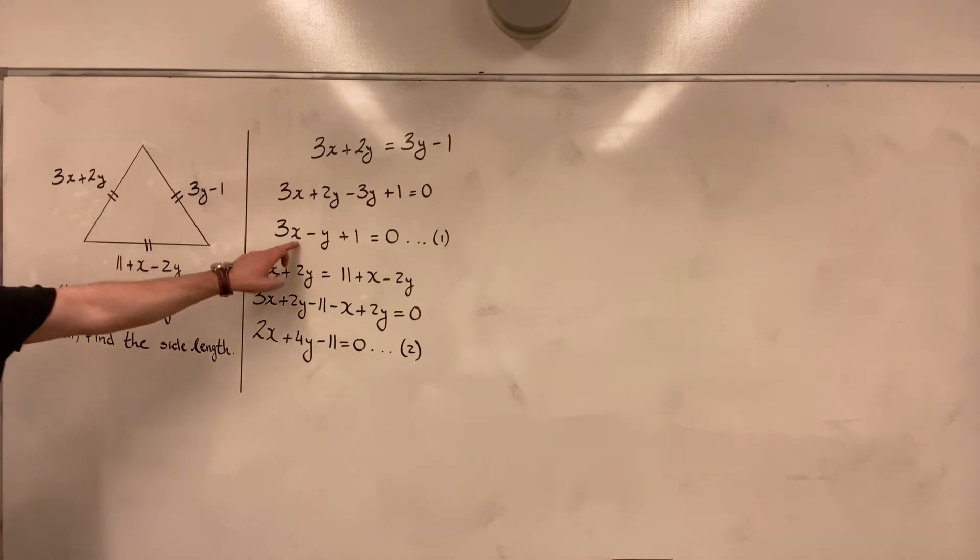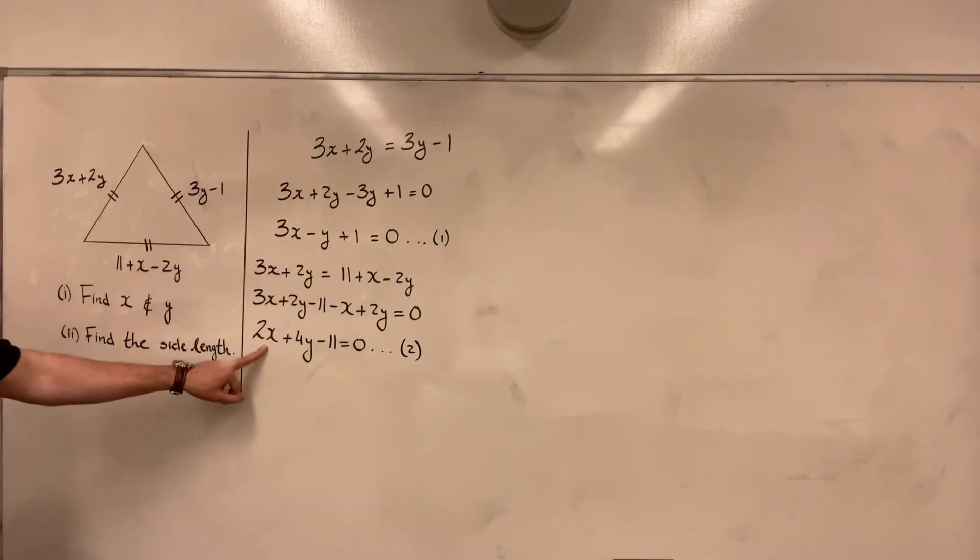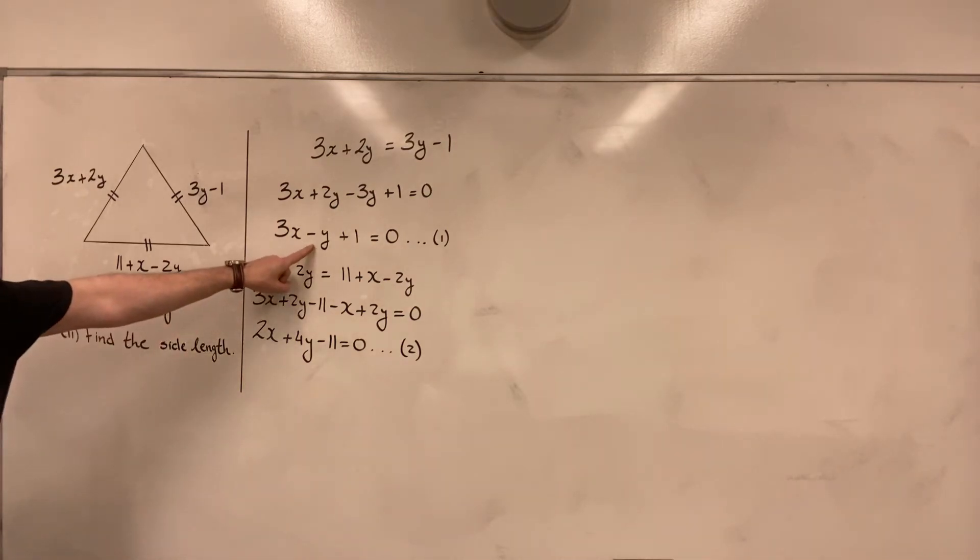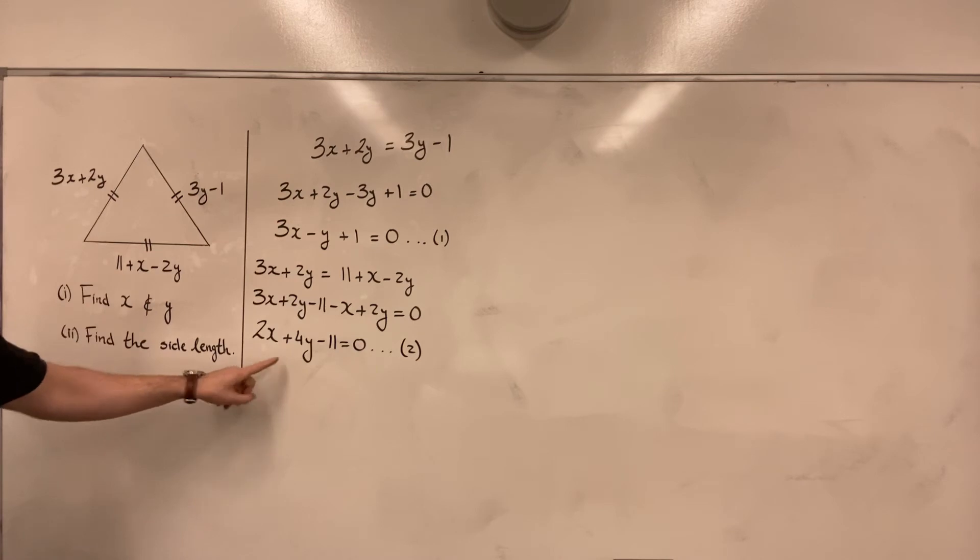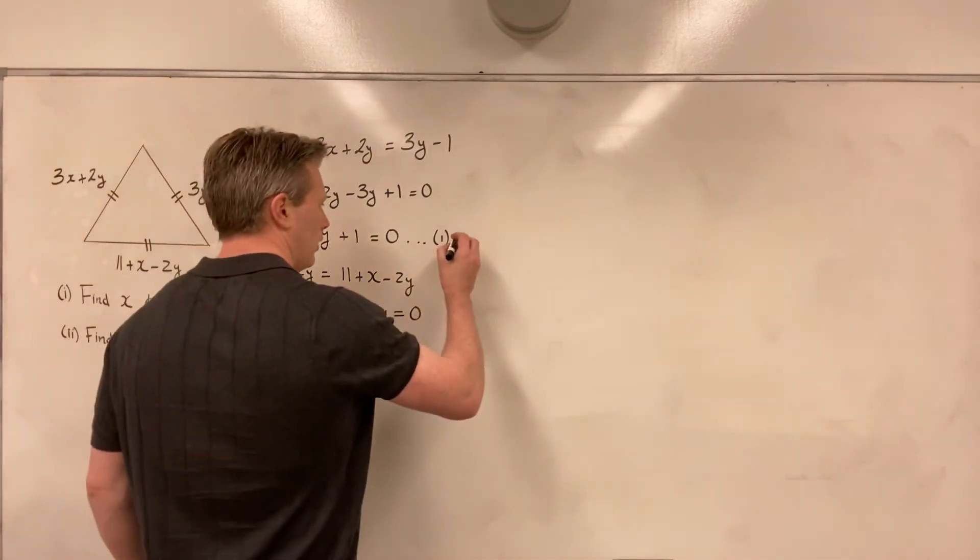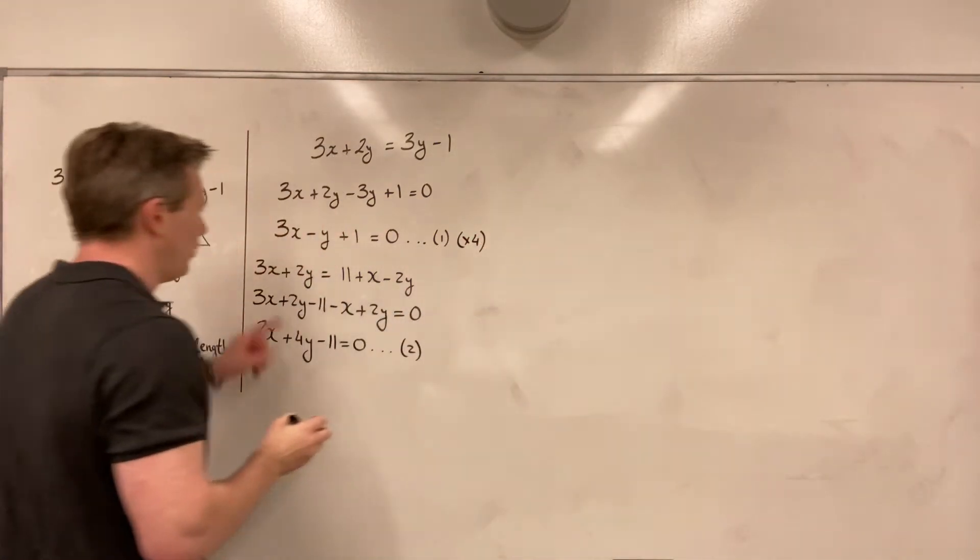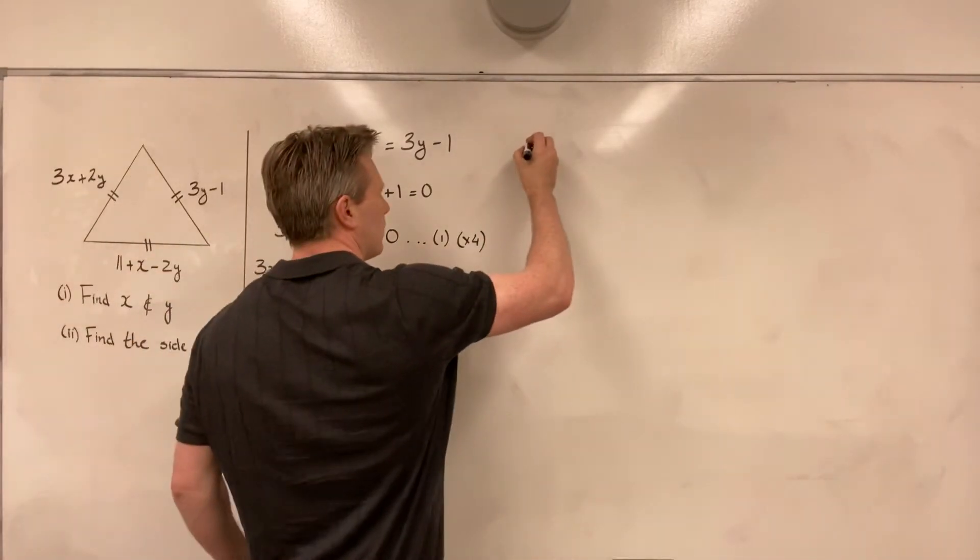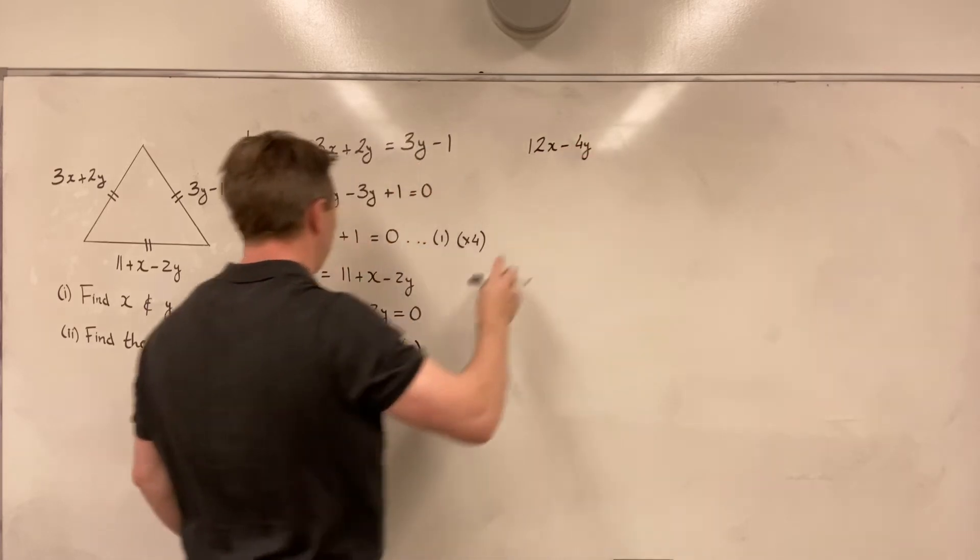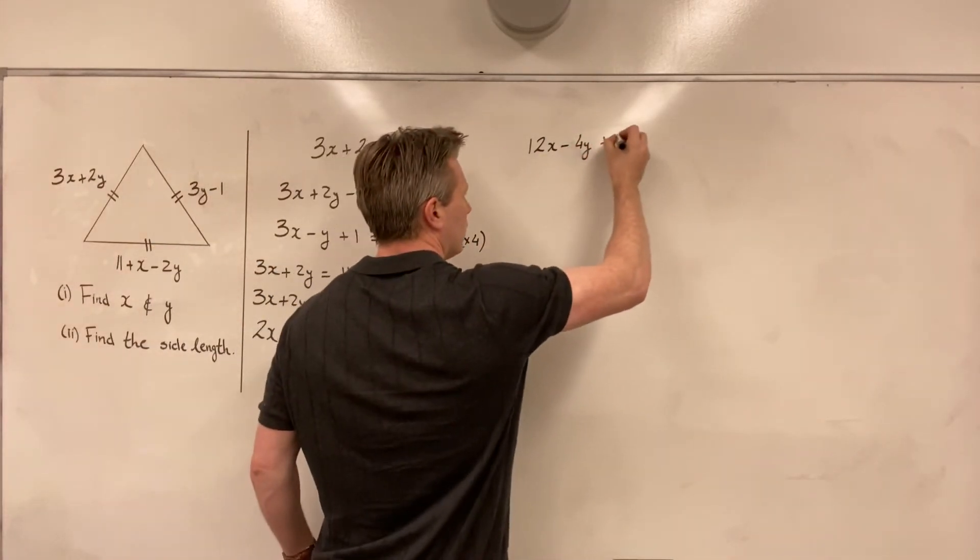So equation number 1 is 3x minus y plus 1 is equal to 0, and equation number 2 that I have formed is 2x plus 4y minus 11 is equal to 0. I'm going to use the elimination method to eliminate one of the variables from these two equations. The easiest thing to do is to multiply this equation number 1 by 4. That will give me a minus 4y term, which will then, when I add it to equation number 2, cancel with my plus 4y term here. So let me do that. We multiply this equation here by 4. And so I will get 4 times 3, that's 12x, minus 4y plus 4 is equal to 0.